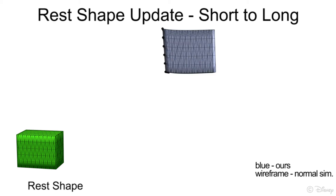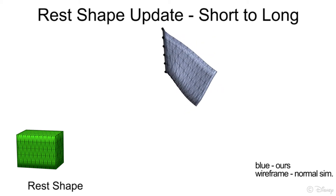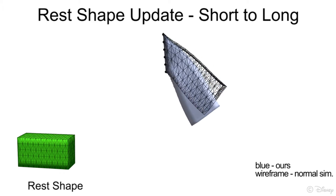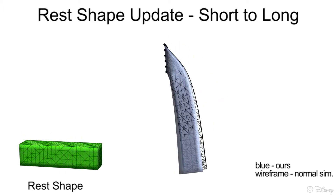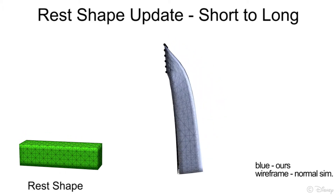Here's another example going from short to long. When the shape changes, our simulation directly reflects the new rest configuration without unwanted dynamic effects.